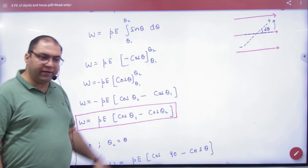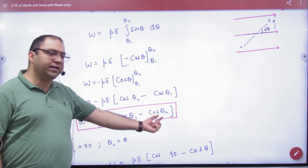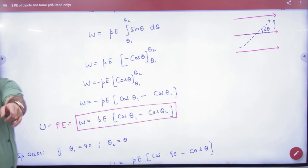One more upper, one more lower limit, minus sign inside, so P E cos theta1 minus cos theta2 answer. Note in your formula register, expression for potential energy stored in a dipole is P E cos theta1 minus cos theta2.